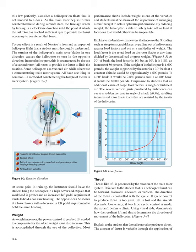Explain to students how maneuvers that increase G-loading — such as steep turns, rapid flares, or pulling out of a dive — create greater load factors and act as a multiplier of weight. The load factor is the actual load on the rotor blades at any time, divided by the normal load or gross weight. At 30 degrees of bank, the load factor is 1G, but at 60 degrees, it is 1.8G — an increase of 80%. If the weight of the helicopter is 1,600 pounds, in a 60-degree bank it would support 2,880 pounds, and in an 80-degree bank, 8,000 pounds. An additional cause of large load factors is rough or turbulent air, as severe vertical gusts can cause a sudden increase in angle of attack (AOA), resulting in increased rotor blade loads.